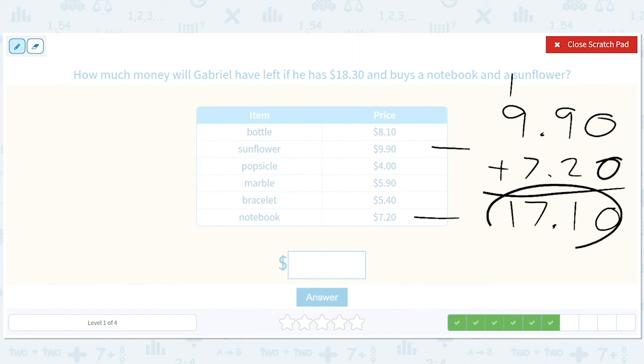So we'll take our eighteen thirty, we'll subtract our seventeen ten, line up the decimals, and we'll have a dollar and twenty cents left over. Not enough to really buy anything on this list, but it's better than nothing, right? So a dollar twenty cents.